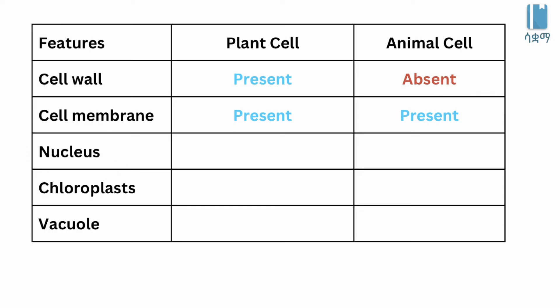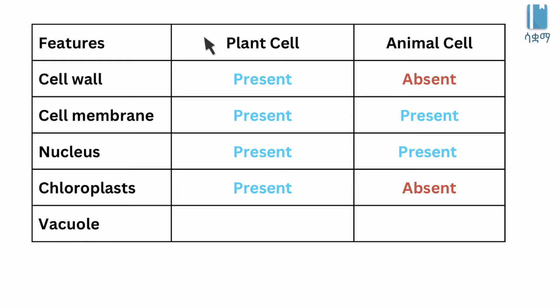Nucleus: present in both animal and plant cells. Chloroplasts: present in plant cells only, absent in animal cells.